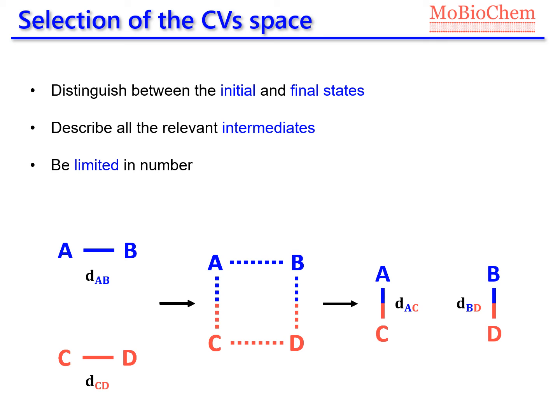Additionally, the number of considered collective variables should be small. Therefore, taking into account the proposed intermediates, one could think about this reduction of variables, in which each collective variable is expressed in terms of two interatomic distances.